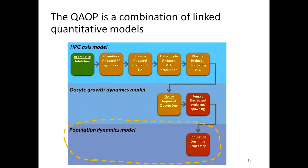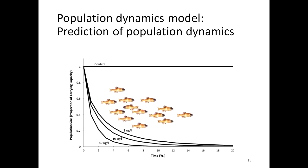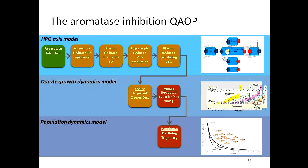At last, I will show the population dynamics model, developed by Dr. David Miller at the U.S. EPA. This shows the prediction of population dynamics, where the model takes the output from the oocyte growth dynamic model under the exposure scenario and performs predictions for population trajectory. The x-axis is time in years, and the y-axis is population size. For fish exposed to phytosol at 2, 10, or 50 microgram per liter, the model shows that these exposures would induce a significant reduction in fish population. Taken together, the aromatase inhibition QAOP is the linkage of three models: the HPG axis model, oocyte growth dynamic model, and population dynamics model.